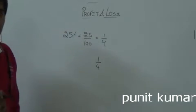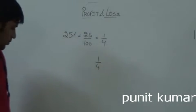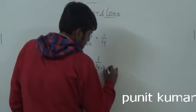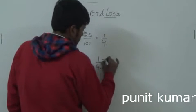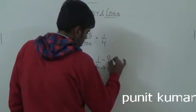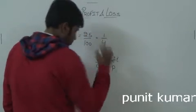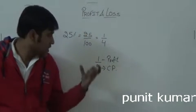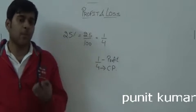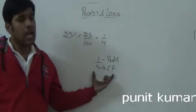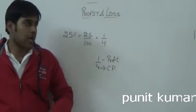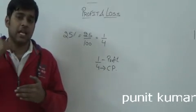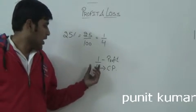When you talk about Profit and Loss, this ratio means: this is your CP, and this is your profit. So if I bought something at 4 rupees and I want a profit of 25%, then I need to increase the price. The 1 by 4 ratio means the profit is 1 part on a CP of 4 parts.